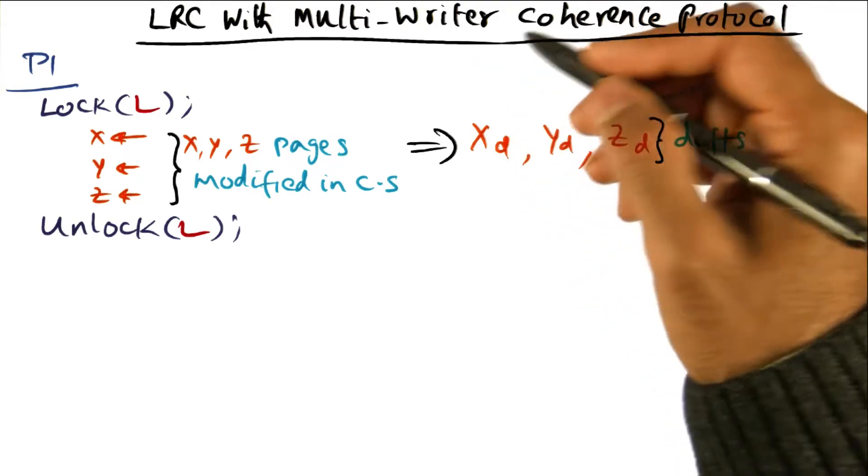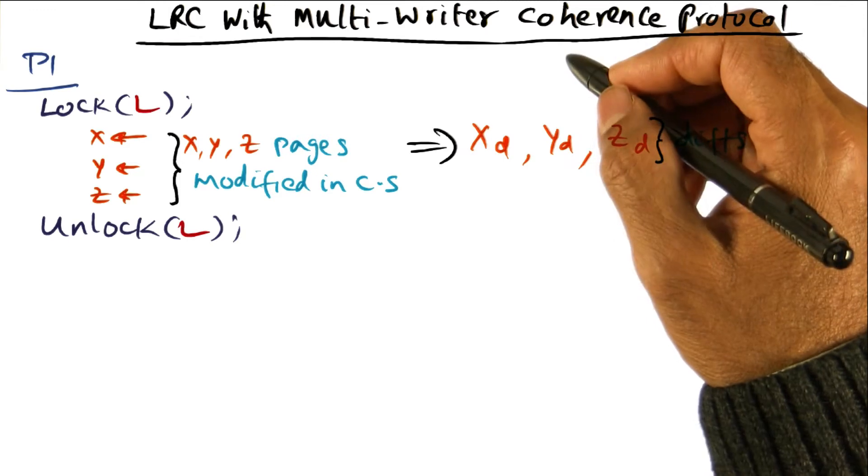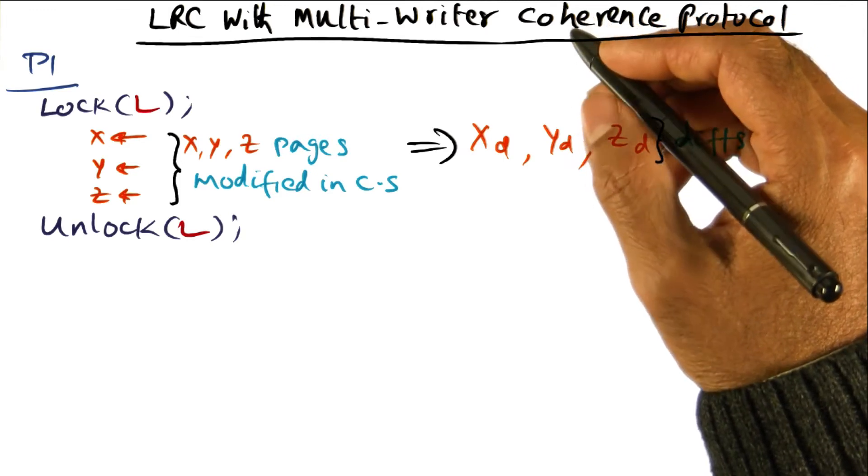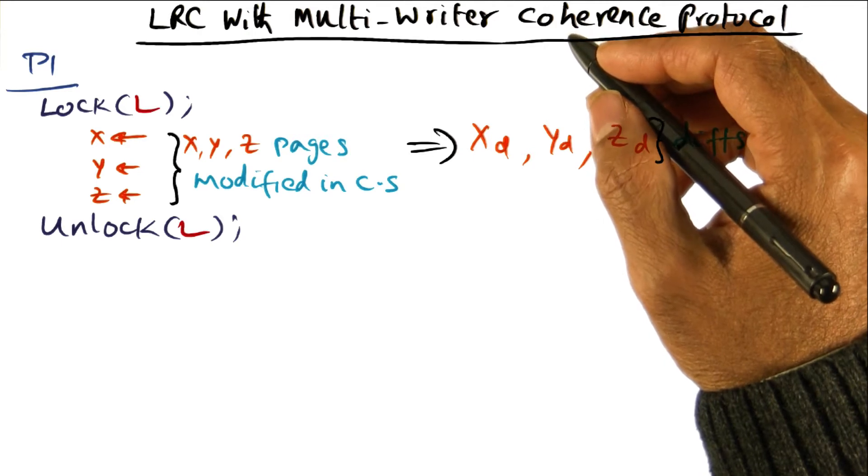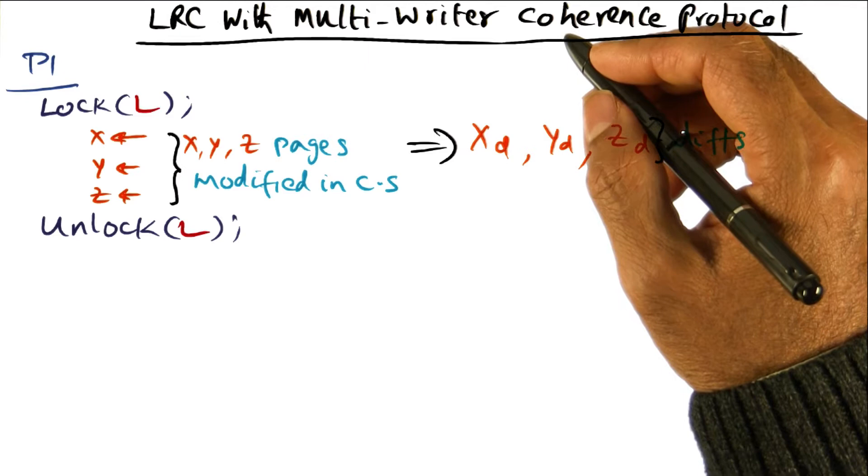That brings us to a new coherence protocol, which is the multiple writer protocol. The idea is we want to maintain coherence information still at the granularity of pages, because that is the granularity at which the operating system operates.